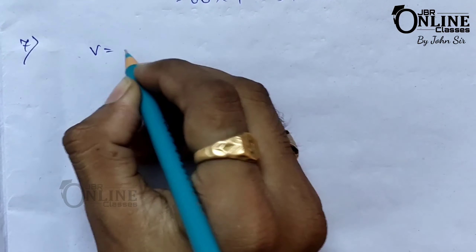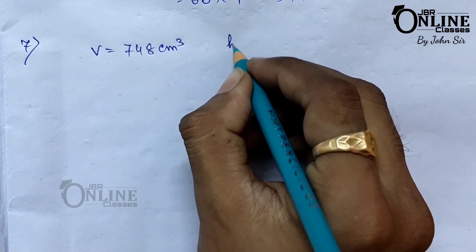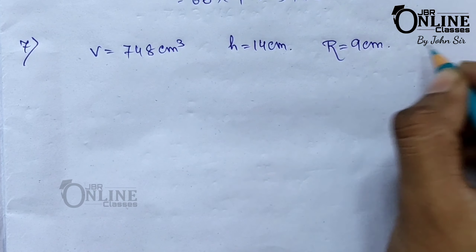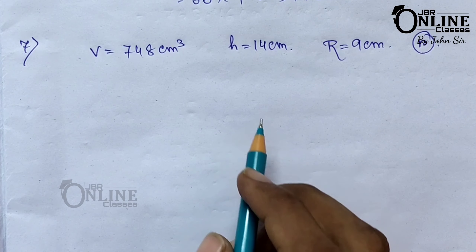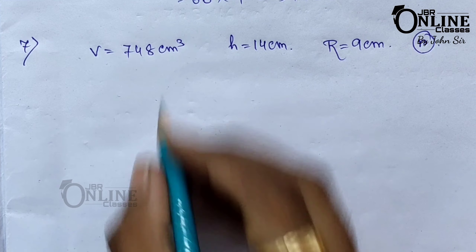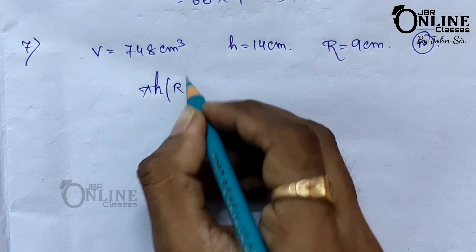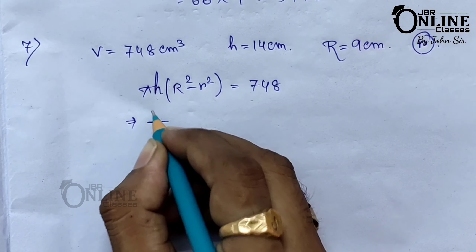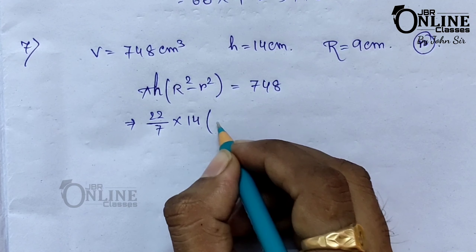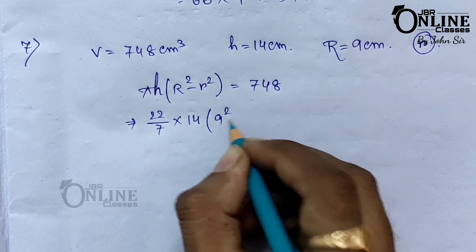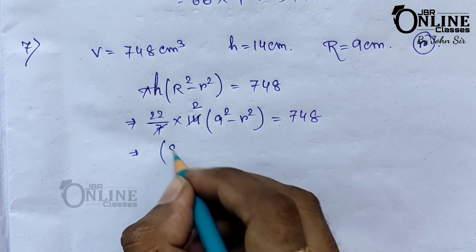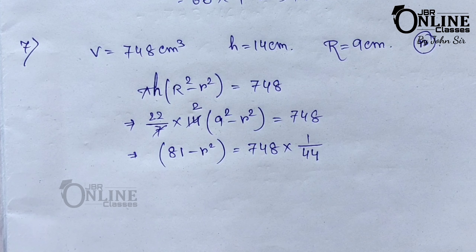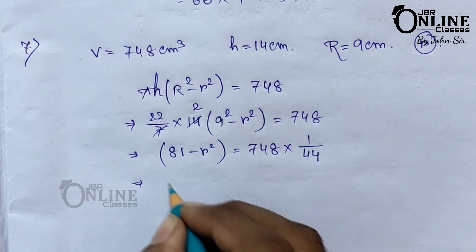Sum number seven: the volume of metal in a cylindrical pipe equals 748 centimeter cube, length h equals 14 centimeters, and external radius capital R equals 9 centimeters. Let the internal radius be small r. Using the formula pi h(R squared minus r squared) equals 748: 22/7 × 14 × (81 minus r squared) equals 748. So 44 × (81 minus r squared) equals 748, giving 81 minus r squared equals 17.